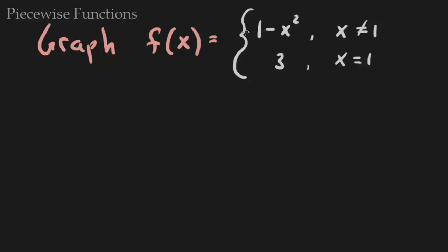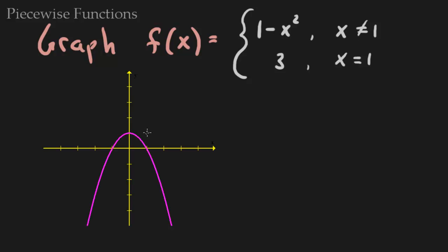What we're saying here is that f(x) is supposed to look like 1 minus x squared, which is a parabola. You have the graph 1 minus x squared, and it's supposed to look like 1 minus x squared as long as x is not 1. So here's 1 minus x squared as long as x is not 1. Where x does equal 1 is right here — so this is the only place that you're not supposed to look like 1 minus x squared.